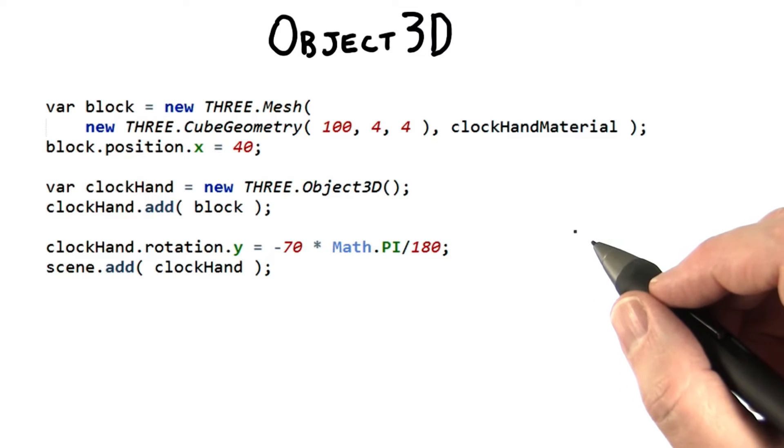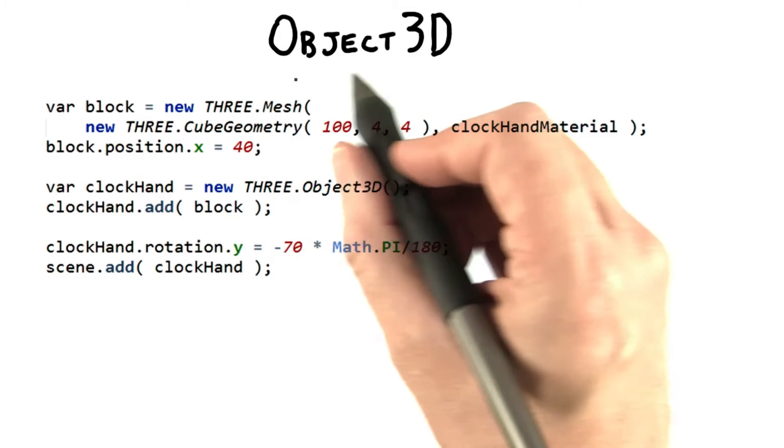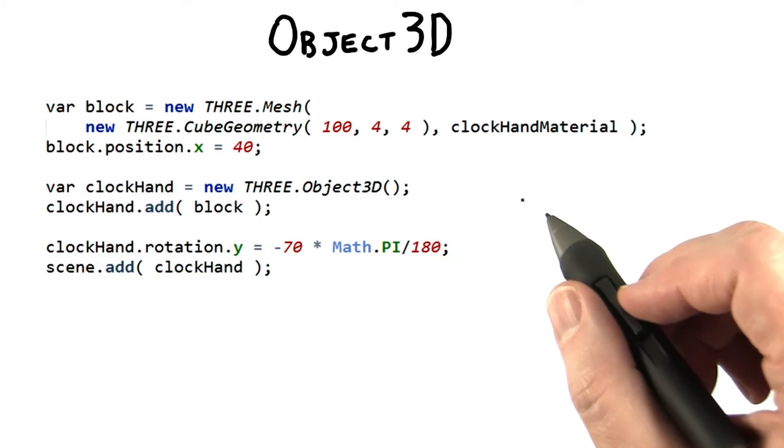One simple solution that Three.js provides is to use Object3D to make a new object that contains our clock hand.